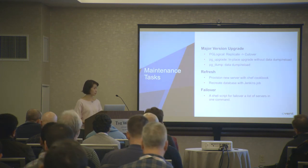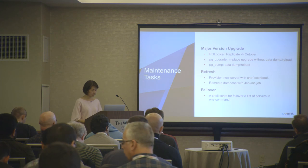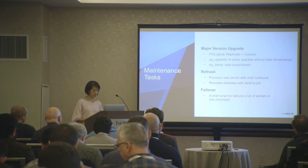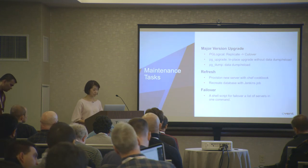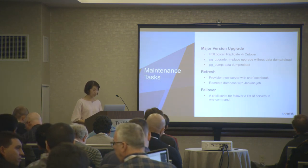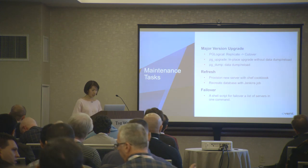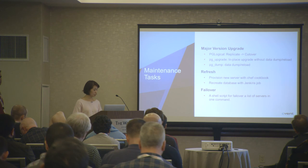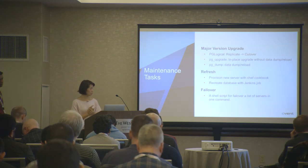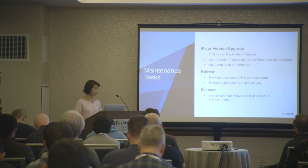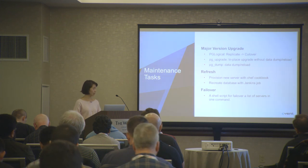The other maintenance task is refresh. At the end of every sprint, the development team may decide they want a brand new database with no data. We can either wipe out the entire server and reprovision it with the Chef cookbook, or recreate a database. We created a Jenkins job for them so they can just specify the server name and the database to easily do this on their own, with our standards built in. For failover, if you want to fail over all 40 database instances at the same time, we created a shell script on a centralized server where you run one simple command and it reads a list of all servers in production and fails them over at once — so you don't have to log in to each one individually.